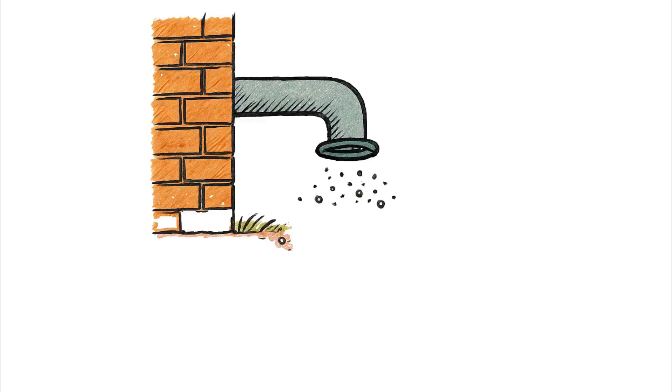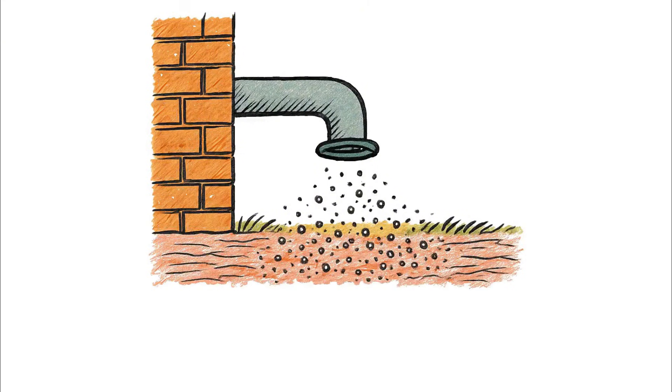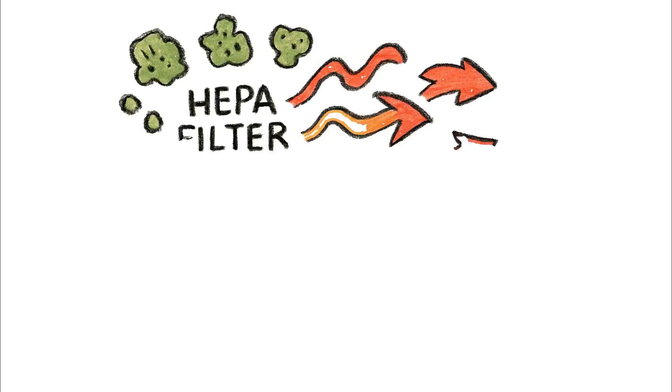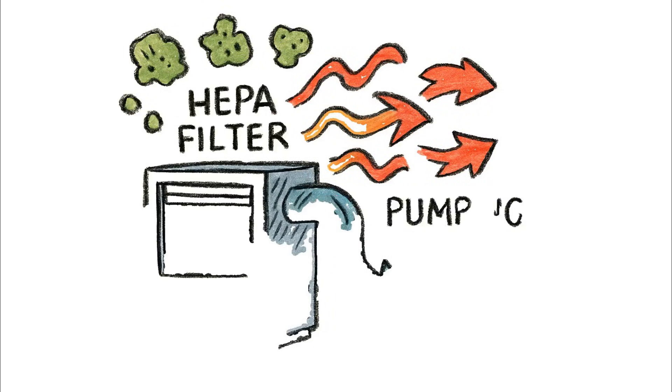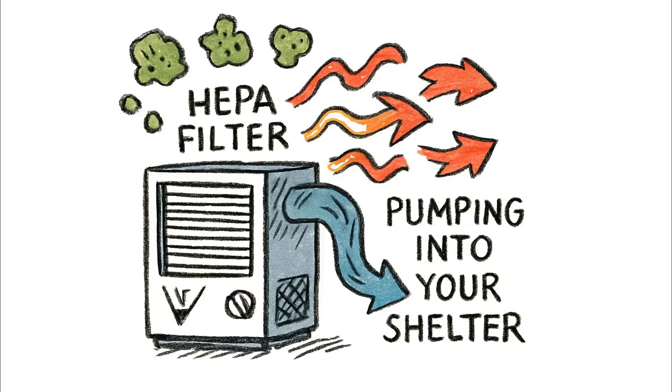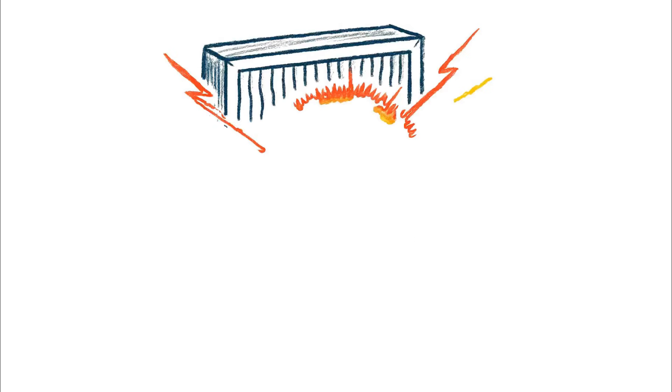But where is that pipe located? Usually, it's just a foot or two off the ground, right in the layer where the heaviest fallout particles have settled. Your ventilation fan then diligently sucks this contaminated air into your living space. If that system is not equipped with a true HEPA filter, one designed to capture submicron particles, then you are actively pumping the source of the radiation directly into your shelter.